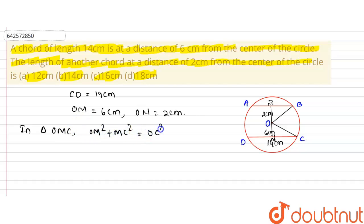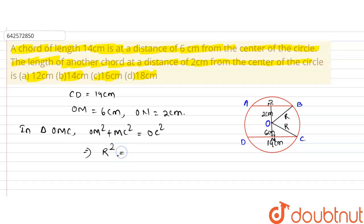In triangle OMC: OM² + MC² = OC², where OC is the radius r. So r² = OM² + MC², where MC equals CD divided by 2.